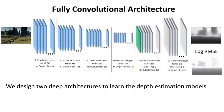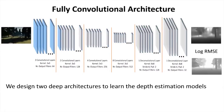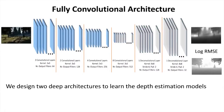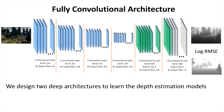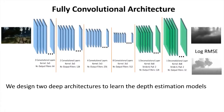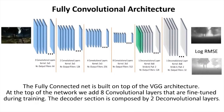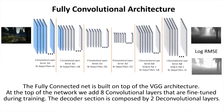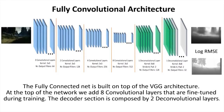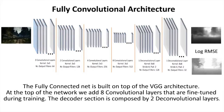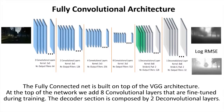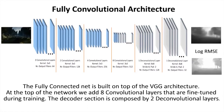To learn the depth estimation models, we propose two architectures. The first one is a fully convolutional architecture structured in an encoder-decoder fashion. In our proposed network, the encoder section corresponds to the popular VGG network, pruned of its fully connected layers.